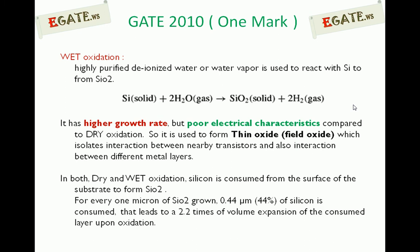Wet oxidation has a higher growth rate but poor electrical characteristics compared to dry oxidation. It is used to form thick oxide, which isolates interactions between nearby transistors and also prevents interaction between different metal layers.